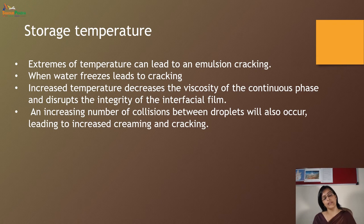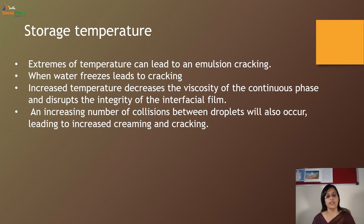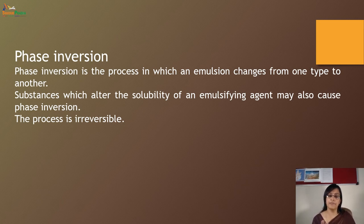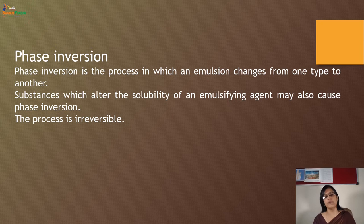Monitoring storage temperature prevents creaming and coalescence. Extreme temperatures can lead to cracking of the emulsion — when water freezes, it leads to cracking. Increased temperature decreases the viscosity of the continuous phase, disrupts the integrity of the interfacial film, and increases the number of collisions between droplets, leading to increased creaming and sedimentation. Phase inversion is the process in which an emulsion changes from one type to another — for example, oil-in-water converting to water-in-oil. Substances that alter the solubility of an emulsifying agent may also cause phase inversion, and this process is irreversible.